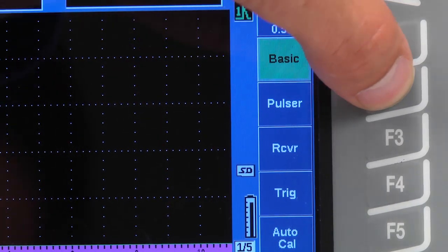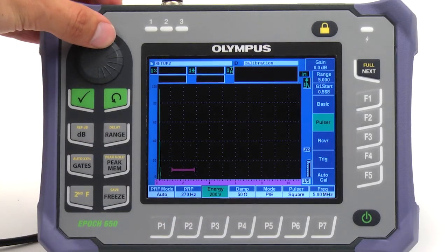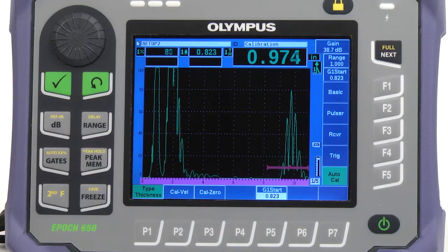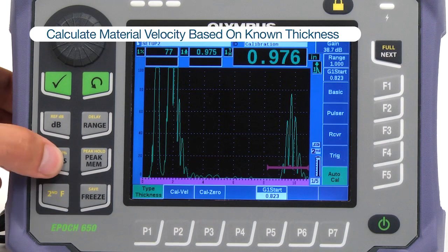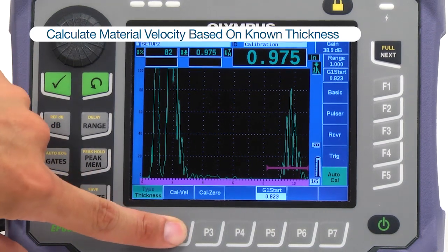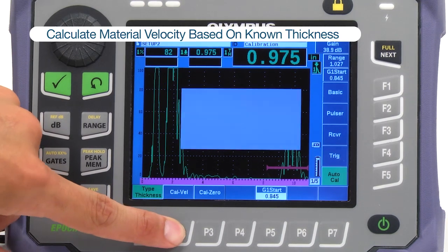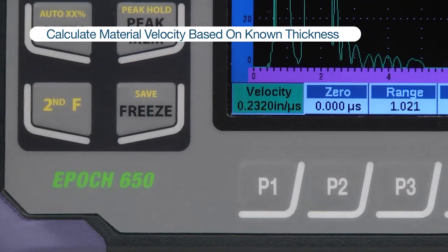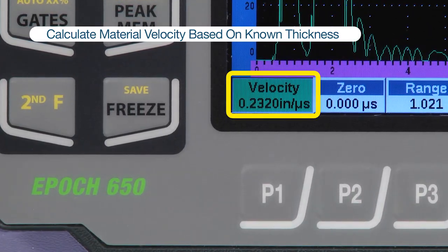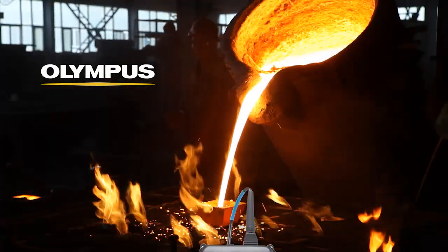If needed, we can use high pulsing power to ensure sufficient penetration. Once a clean back wall is visible, we can calculate the material velocity based on our known thickness and make sure that the sound velocity is appropriate. This gives us confirmation that the microstructure is uniform and that the graphite inclusions are of the right form.